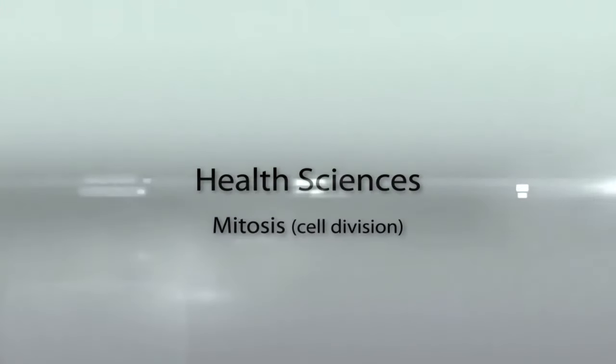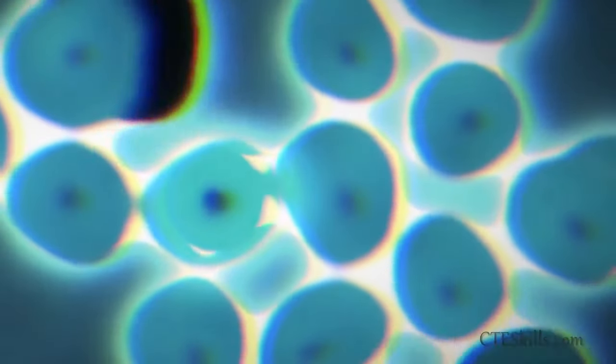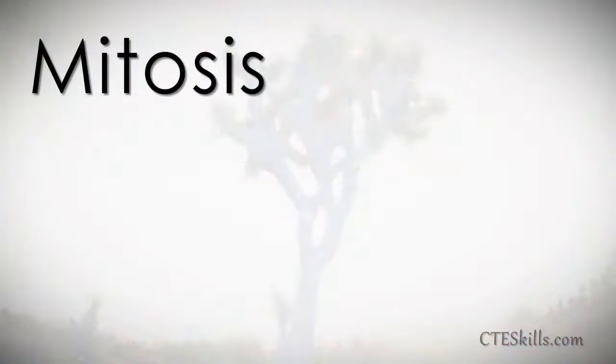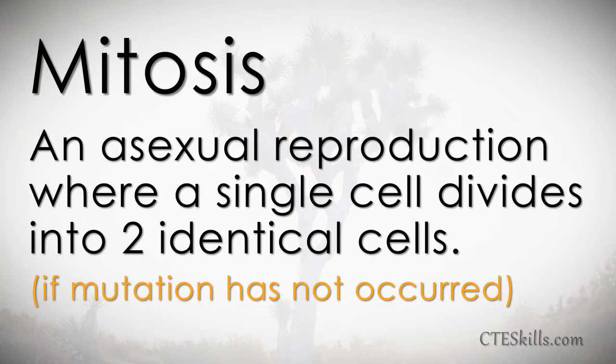How does a cell make another cell? It does it by a process called mitosis. Mitosis is an asexual reproduction where a single cell divides into two identical cells.